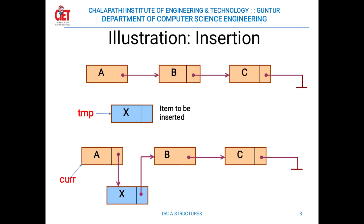This illustration shows how to insert a new element into the list. The previous list has three elements: A, B, and C. A points to element B, B points to element C, and C points to null — meaning it is the end of the list. Now, we want to insert a new element X.